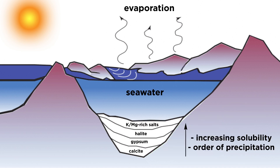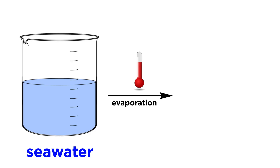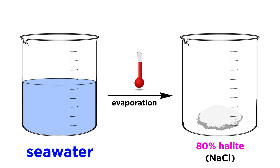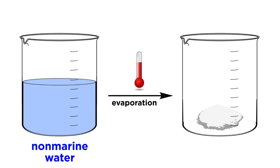Because seawater is essentially globally homogeneous, the minerals that are precipitated during its evaporation follow a specific sequence. Calcite forms first, followed by gypsum, then halite, concluding with various potassium and magnesium rich salts. This sequence is dictated by the relative solubilities of the minerals, with the most insoluble salts precipitating first. If one were to entirely evaporate a beaker of seawater, almost 80% of the total precipitated salts would be halite. On the other hand, nonmarine waters can be much more compositionally variable, reflecting local variations in bedrock mineralogy.